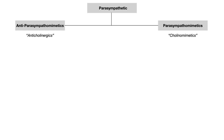When you give somebody a medication that acts on the parasympathetic nervous system, it will have one of two effects: it can be parasympathomimetic — meaning it mimics the parasympathetic nervous system — or it can be anti-parasympathomimetic, meaning it is an anti-cholinergic agent. Cholinomimetics mimic the natural function of acetylcholine at muscarinic receptors, while anti-cholinergics block those muscarinic receptors and have the opposite effects.